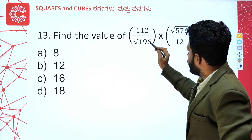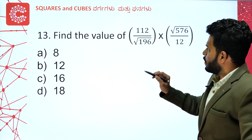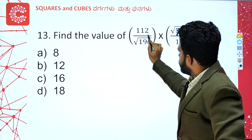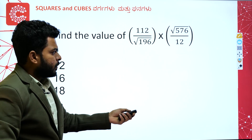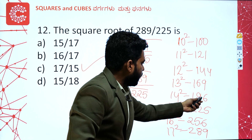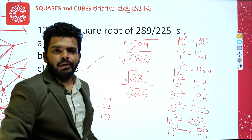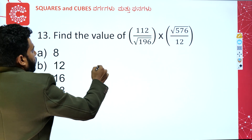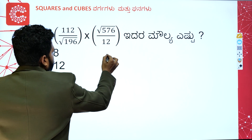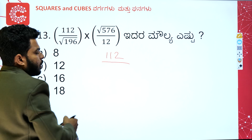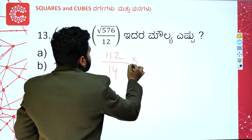Find the value of 112 divided by root 196 into root 576 divided by 12. For square roots, consider the equal numbers. Root 196 — just check: 169 is 13 squared, 196 is 14 squared. So root 196 is 14. Clear. Now for 576...